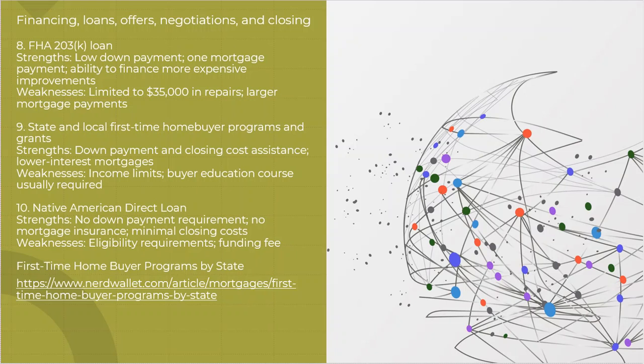A lot of states have first-time homebuyer programs. The strength in those is they do cover down payment and closing cost assistance. They actually do have lower interest rate mortgages. The problem is they have income limits. And I don't mean necessarily you've got to be above. You actually have to be below because it's designed for low to moderate income. And they, too, require educational courses. Obviously, it's nothing earth-shattering. I mean, I am sure anybody that wants to buy a house probably should take this homebuyer's course anyway.